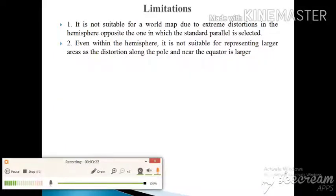It is not suitable for a world map due to extreme distortion in the hemisphere opposite the one in which the standard parallel is selected. Second number: even within the hemisphere it is not suitable for representing large areas as the distortion along the pole and near the equator is larger.